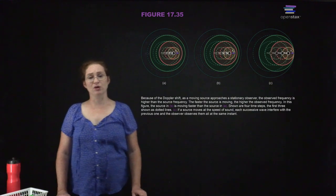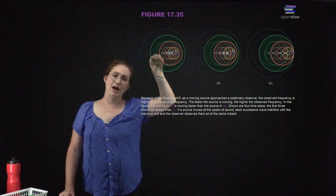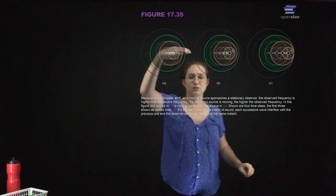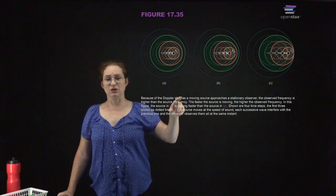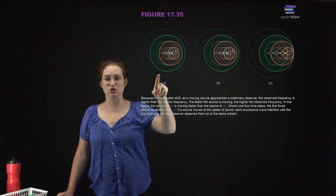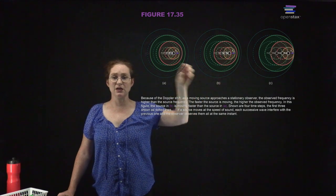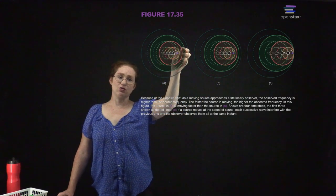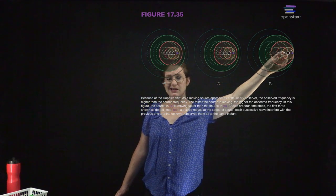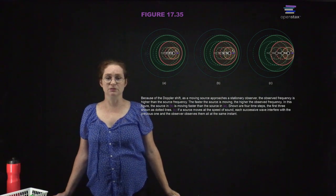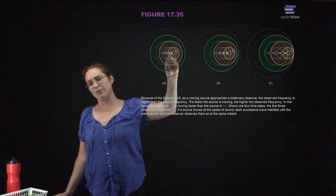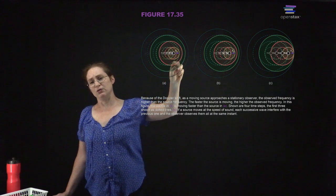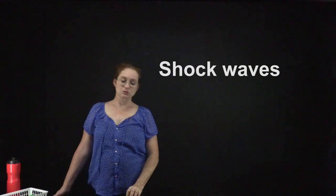Here you can see a picture showing what's happening to the wave fronts. If the source is moving faster — as in case B versus C — the wave fronts get crunched up more. What you hear is going to be the sum of the waves at wherever the point you're observing is.